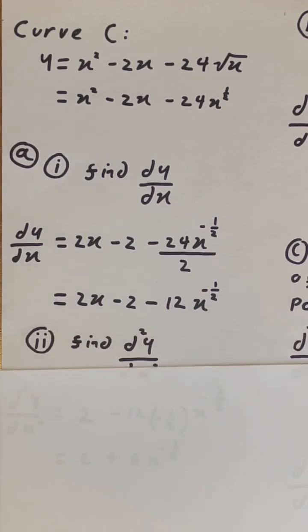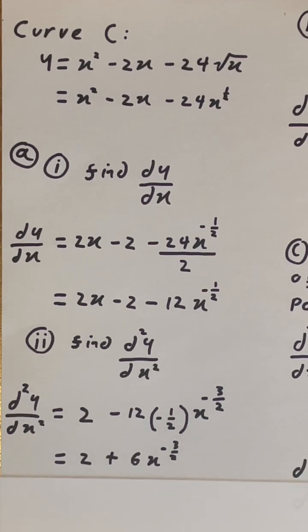Now let's look at part ii. It's asking us to find the second derivative. We can again differentiate the first derivative using the same differentiation rules, which gives us 2 plus 6x to the power of negative 3/2.